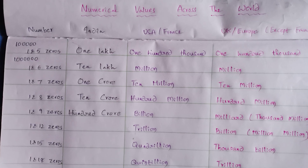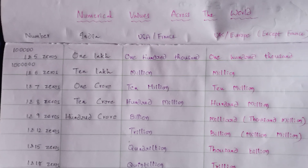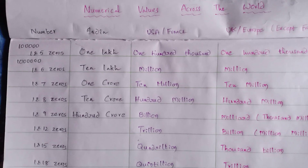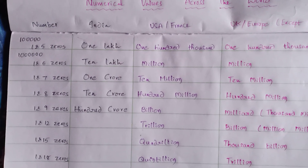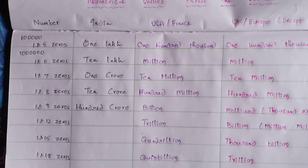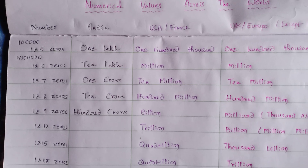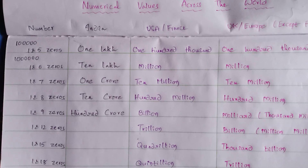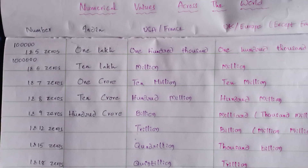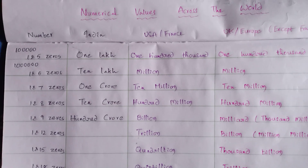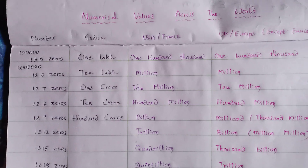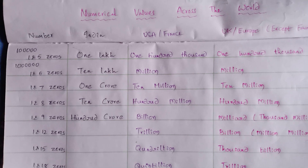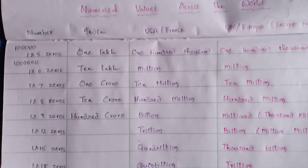Number: India, USA and France, UK and Europe except France. 1 followed by 5 zeros — in India it is known as 1 lakh. In USA and France it is 100,000. In UK and Europe also, except France, 1 and 5 zeros is known as 100,000.